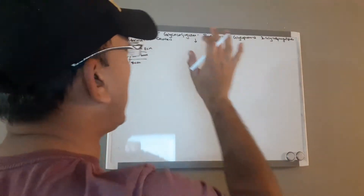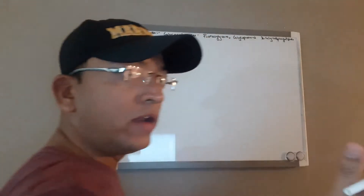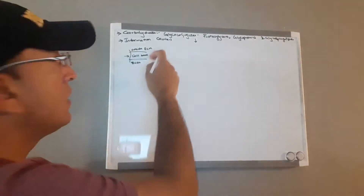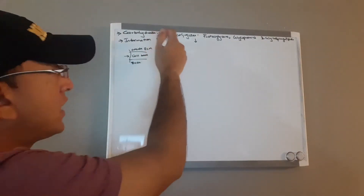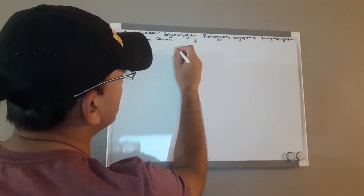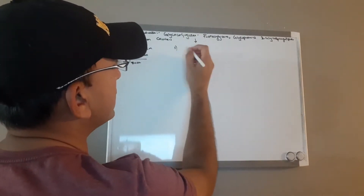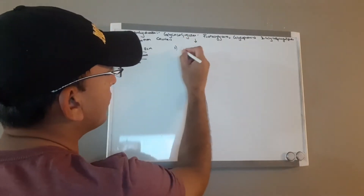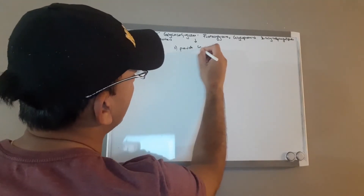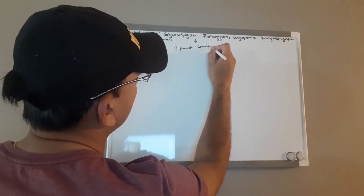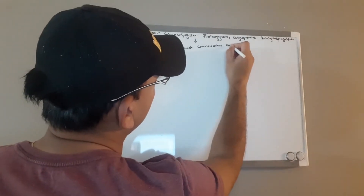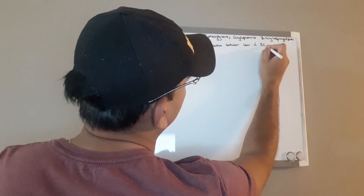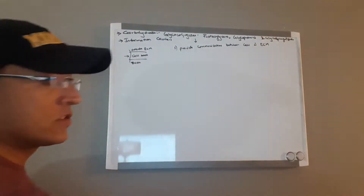The role of these glycoconjugates: the first duty is they provide communication between the cell and the extracellular matrix, or the extracellular surrounding.